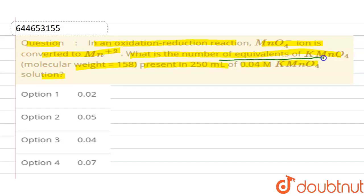In this question, MnO₄⁻ is converted into Mn²⁺. Now, we will calculate the oxidation state of manganese. Suppose it is x. We know that the oxidation state of oxygen is -2.